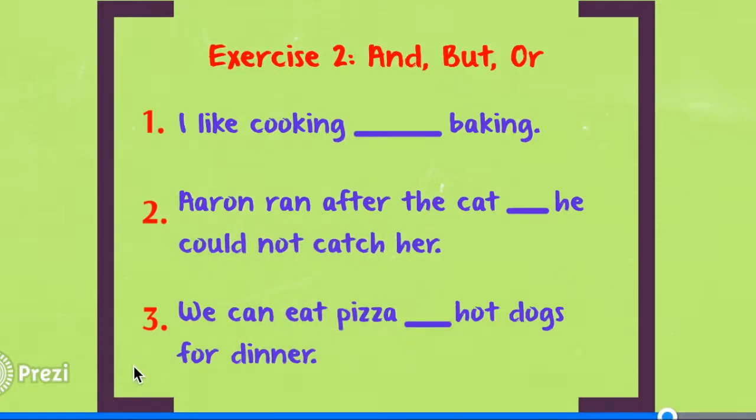And for number three, it says we can eat pizza blank hot dogs for dinner. So it looks like we are giving two choices pizza, hot dogs. So a choice means that you would use the conjunction or. So you would say we can eat pizza or hot dogs for dinner.